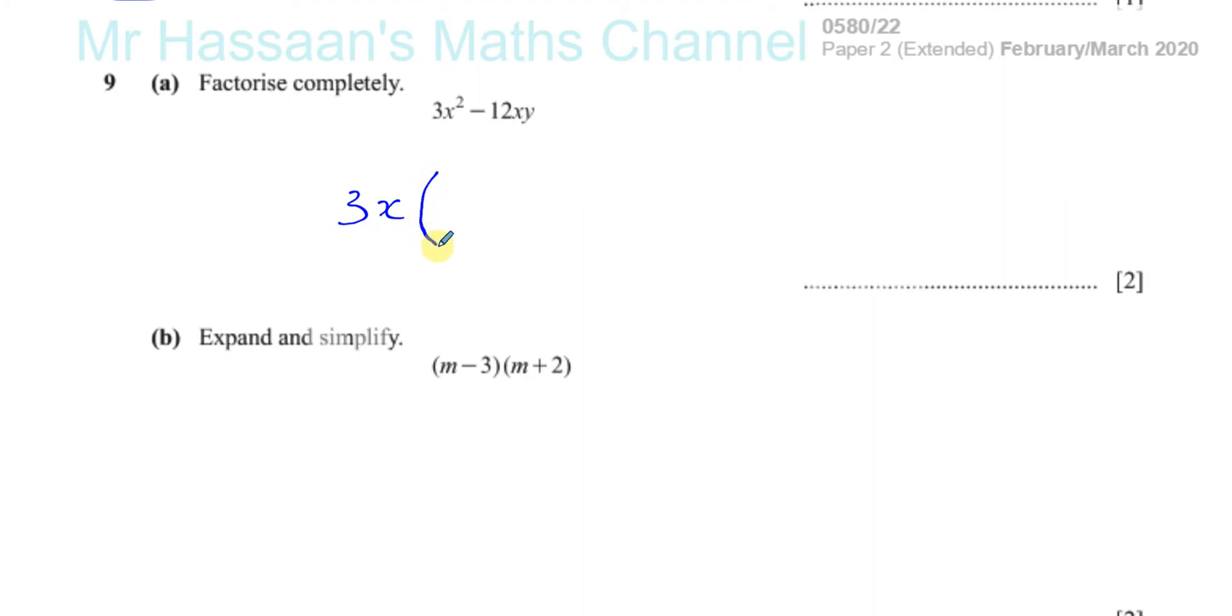And then you open your bracket and you say, okay, three x times something gives me three x squared. Well, that must be x. Three x times x is three x squared. And you've got three x times something gives you negative 12xy. Have a negative four, that gives me the negative 12 part, and then we've got a y. And there we have it, it's factorized completely: three x times x minus four y.